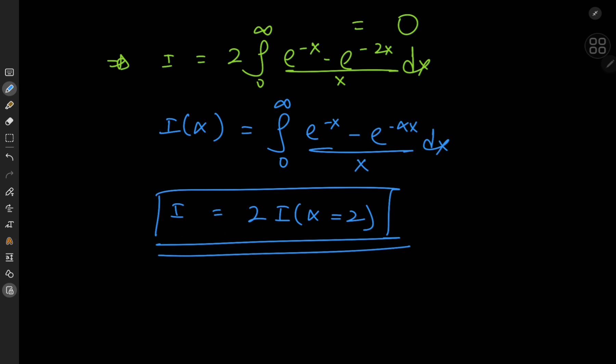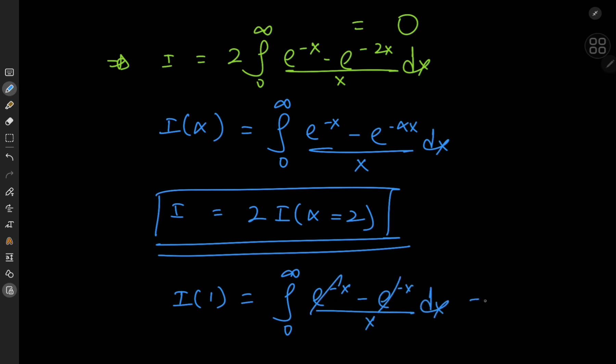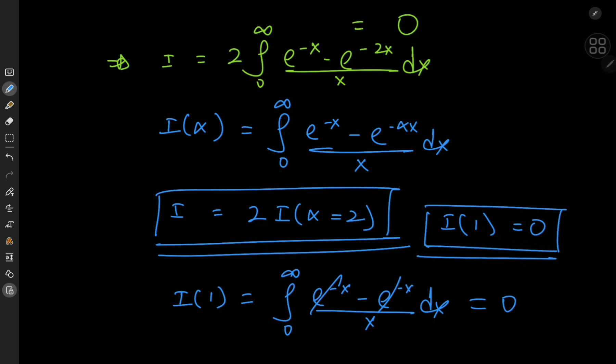Because using Feynman's trick is essentially solving a differential equation given some initial value, we need an initial value for this integral function. A convenient choice is alpha equal to 1, because that gives us the integral from 0 to infinity of (e to the negative x minus e to the negative x) over x dx, which evaluates to 0. So I(1) = 0 is my initial value, and my target case is I evaluated at alpha equal to 2.